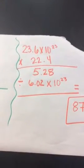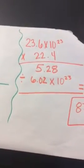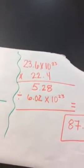And then you multiply the top, and then you get 23.6 times 10 to the 23rd times 22.4. That equals 5.28.